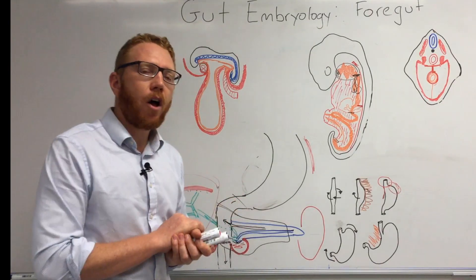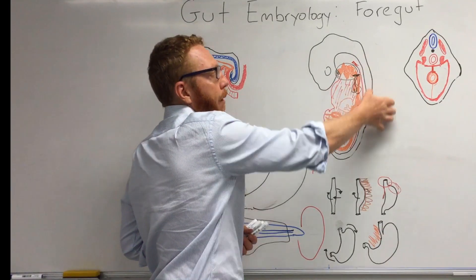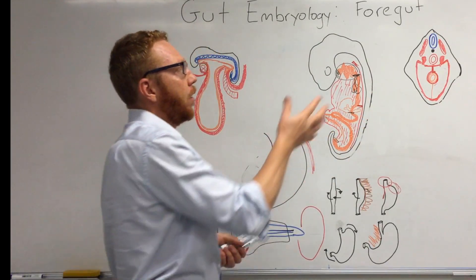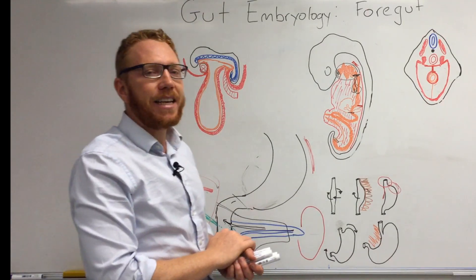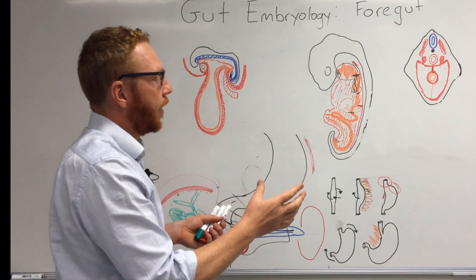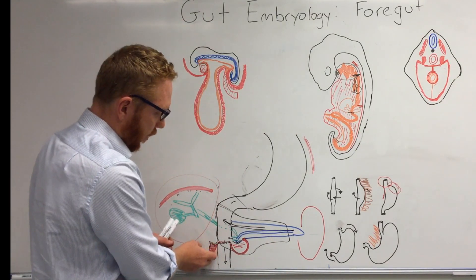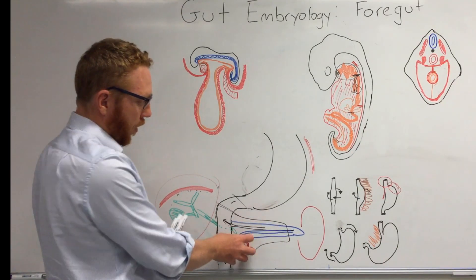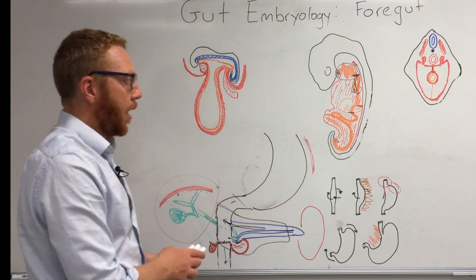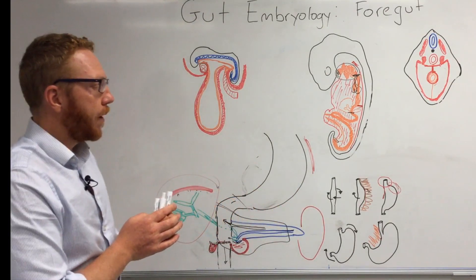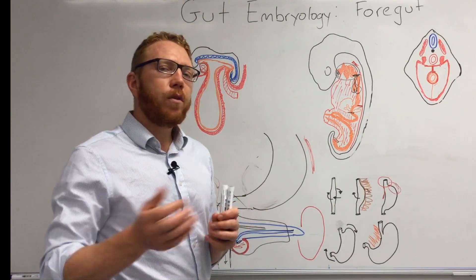To summarize: the foregut starts at the lung bud and ends at the liver bud. Its blood supply — all structures between those two points — comes from the celiac artery. The main diverticula are the liver (with the biliary ducts and gallbladder) and the pancreas in two parts: the ventral forming the uncinate process and head, and the dorsal forming the body and tail. The spleen forms in the dorsal mesentery. We also covered how the stomach develops, rotates, and reaches its final orientation. Next, we move on to the midgut.